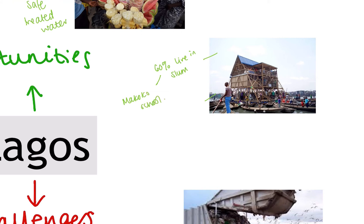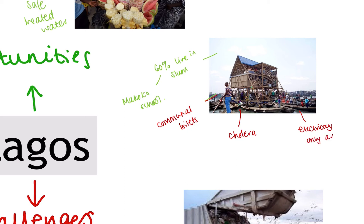Massive challenges exist for the people of Makoko. Things like communal toilets shared by up to 15 families at once mean sanitation isn't great. Cholera outbreaks occur because of poor sanitation. Electricity either doesn't exist or is only available illegally. So quality of life for those living in the slums perhaps isn't as great as we would like it to be.